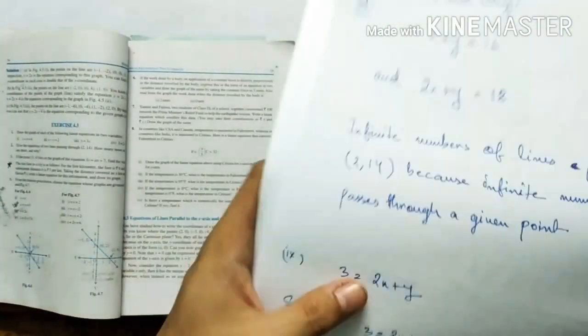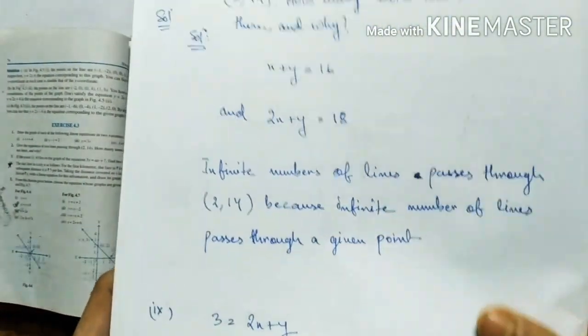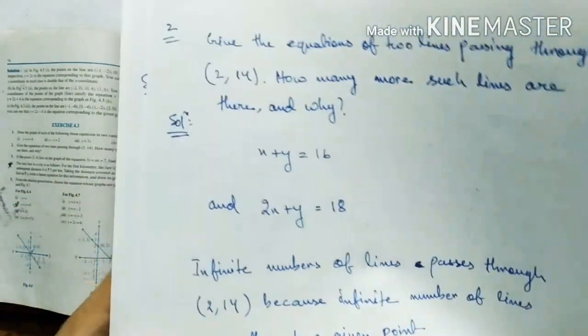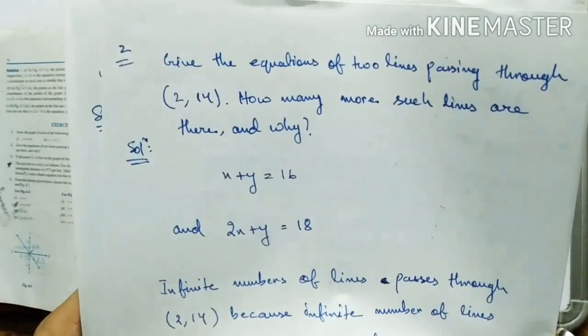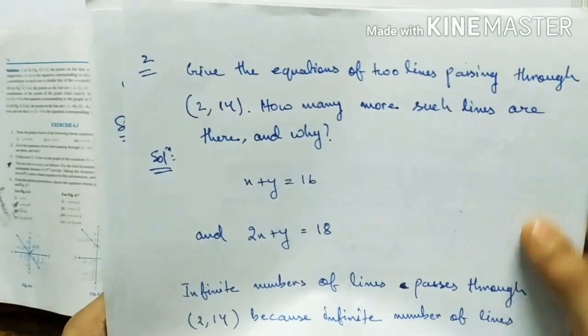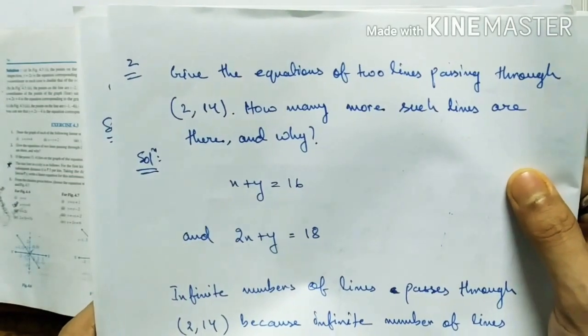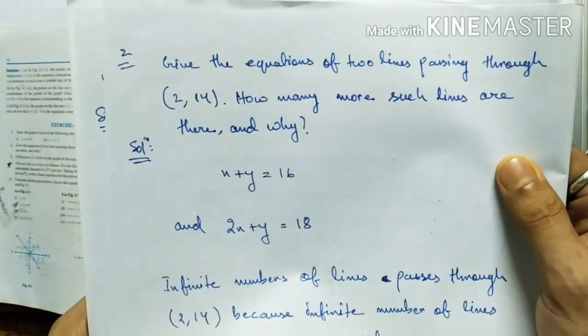The last equation is your homework — try to do it by yourself. Next is Question Number 2: give the equations of two lines passing through the point (2, 14). How many more such lines are there and why?